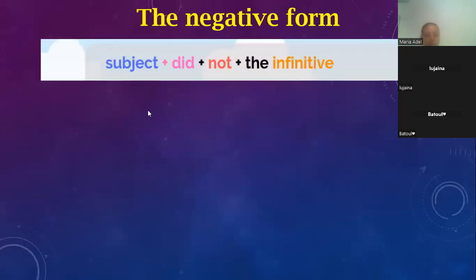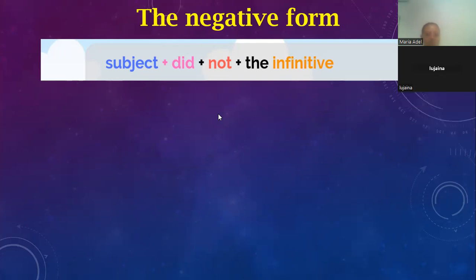Let's go to the negative form. When we want to make it negative, we bring the auxiliary verb 'didn't' — the past form of 'do' in negative. Just like don't or doesn't, the verb comes after them in the infinitive form. The same with didn't: didn't + then the infinitive form of the verb. So the negative is: subject + didn't + infinitive form of the verb.